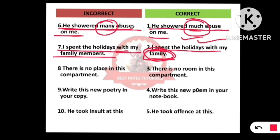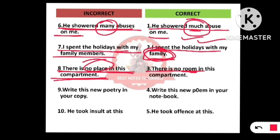Therefore, 'family' should be used instead of 'family members.' Number eight: 'There is no space in this compartment.' Instead of using 'space,' we should use 'room.' The correct sentence is: 'There is no room in this compartment.'